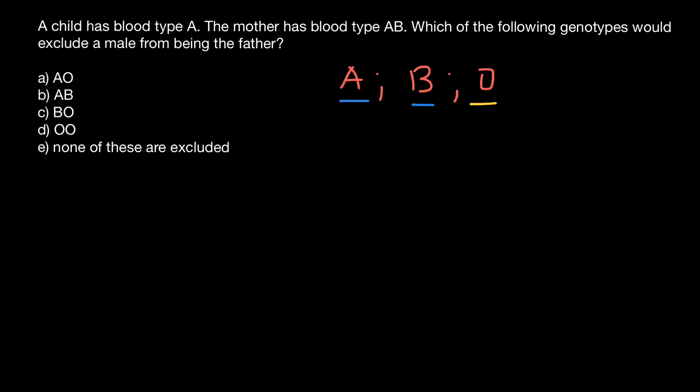These three alleles can produce six genotypes and four blood groups: blood group A, blood group B, blood group AB, and blood group O.